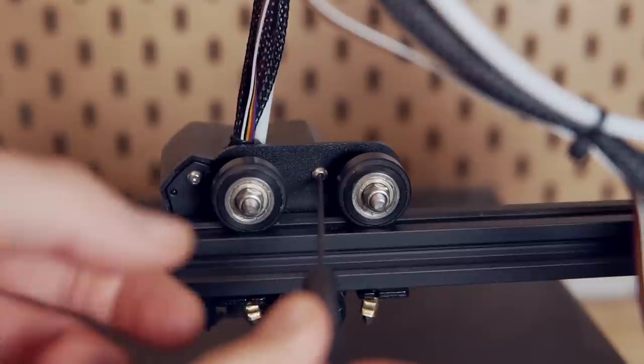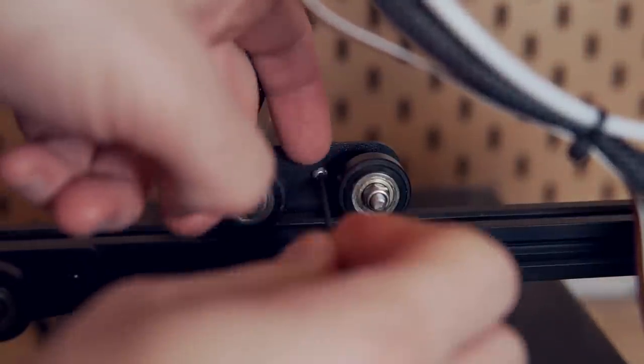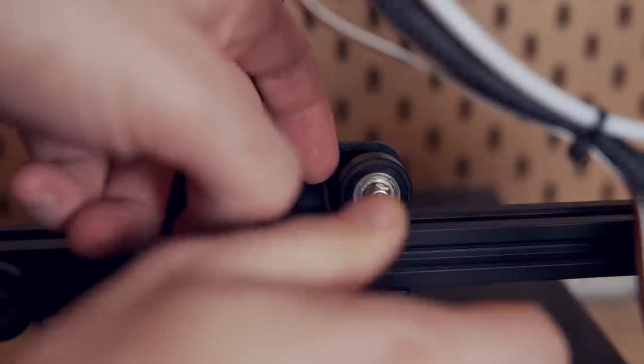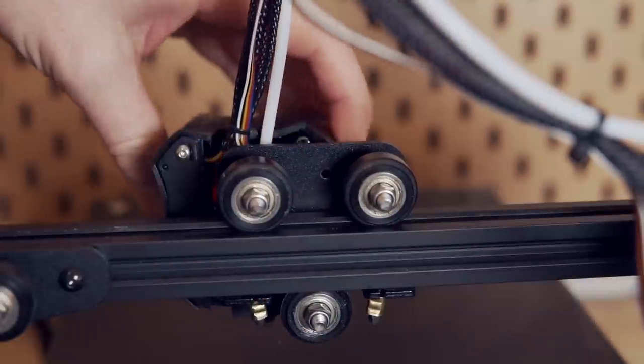We'll need to start off by removing the screw that holds the fan housing to the back plate. There's only one screw and it's going to be the one in between the two v-slot wheels. Once that's removed you'll be able to pivot the fan housing off to the side.